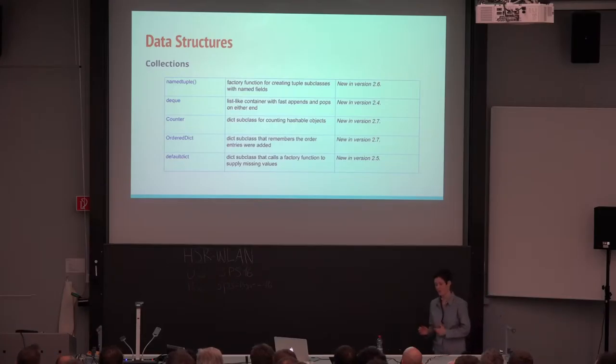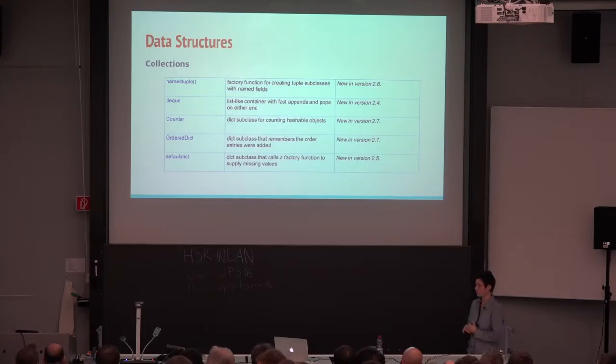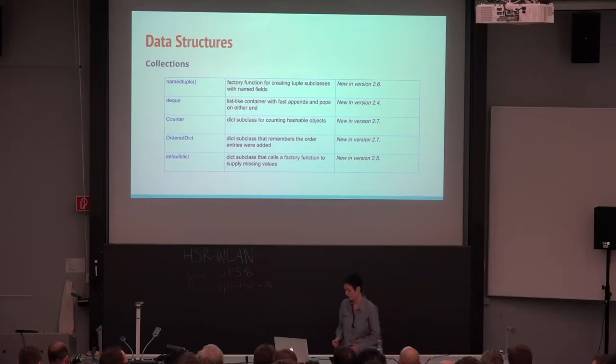We have deque, which is a list with pointers both to the previous and the next item. We have counter and default dict that will go on in a second for a bit of example. And an ordered dict, which is a dictionary that remembers the order you put things inside. The reason I left the versions on the side is to let you know this wasn't always in Python. It was added and it is still added and developed. And if you were to images of AWS, specifically EMR images, you know that there were versions, older versions of Python, for example, Python 2.4 or 2.5. And you didn't have a counter or a default dict and your code might crash.